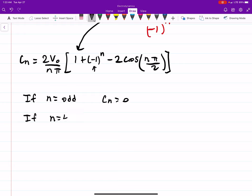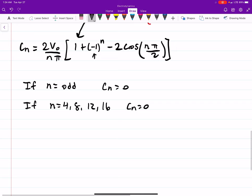If n equals 4, 8, 12, so on, 16, c_n is also 0. Now, why is that? Well, we kind of have to look at it. So first off, if we do that, then this will be 1 plus 1, because n is an even number, so that'll be a positive. But if we plug that in, 4 over 2 will be 2π, so you'll always get minus 2 here. So 1 plus 1 minus 2 is 0. So that's why those are not possible.